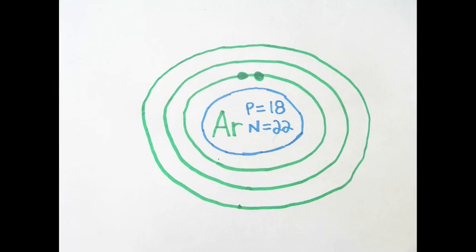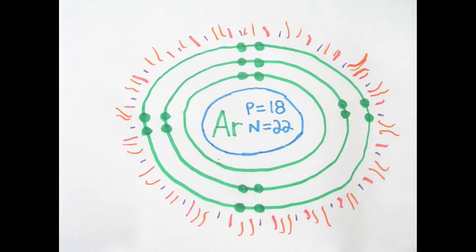Argon Bohr model with three energy levels. The first shell has two electrons, and the next two have eight. But who would have thought it bigger?